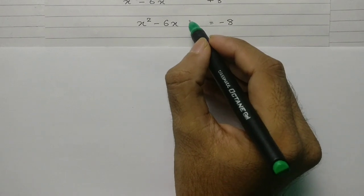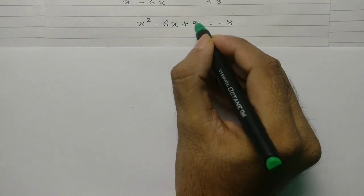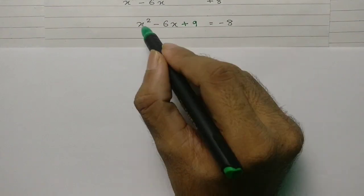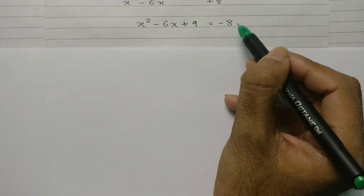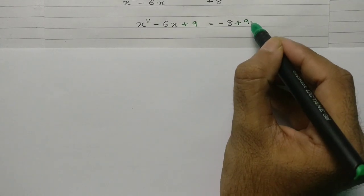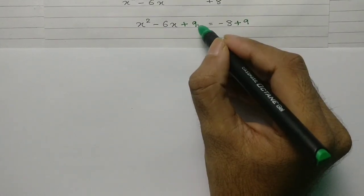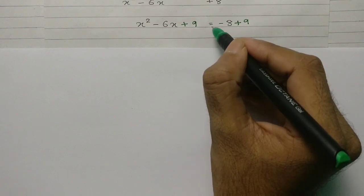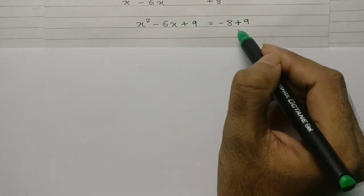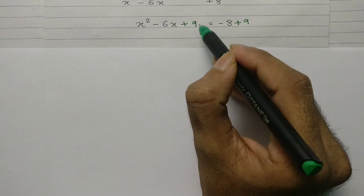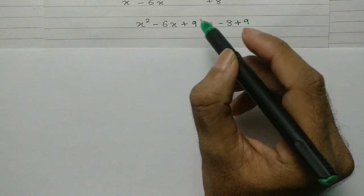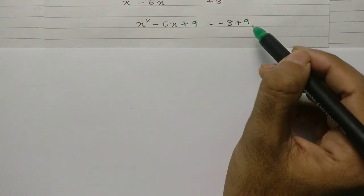I need to add this number 9 to the left side of the equation. But since I am adding a new number of my own, it will change the entire equation. I don't want that, so I will also add 9 on the right side. The positive 9 and negative 9 cancel out, leaving the general equation intact. So I have added 9 on both the left-hand side and right-hand side.